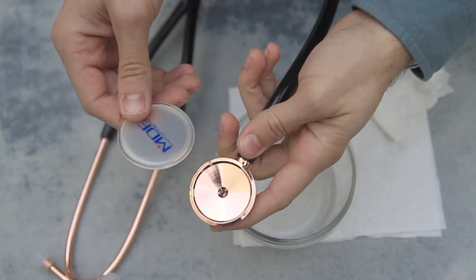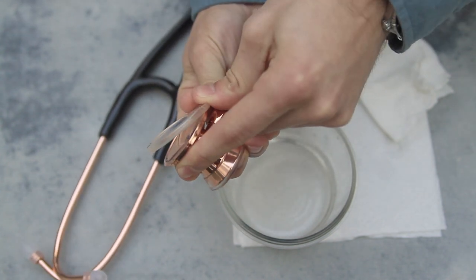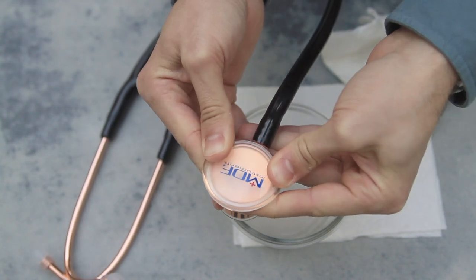To install the retaining ring and diaphragm onto the chest piece, place the lip of the ring under the edge of the chest piece. Continue to press the ring along the edges of the chest piece until it snaps into place.